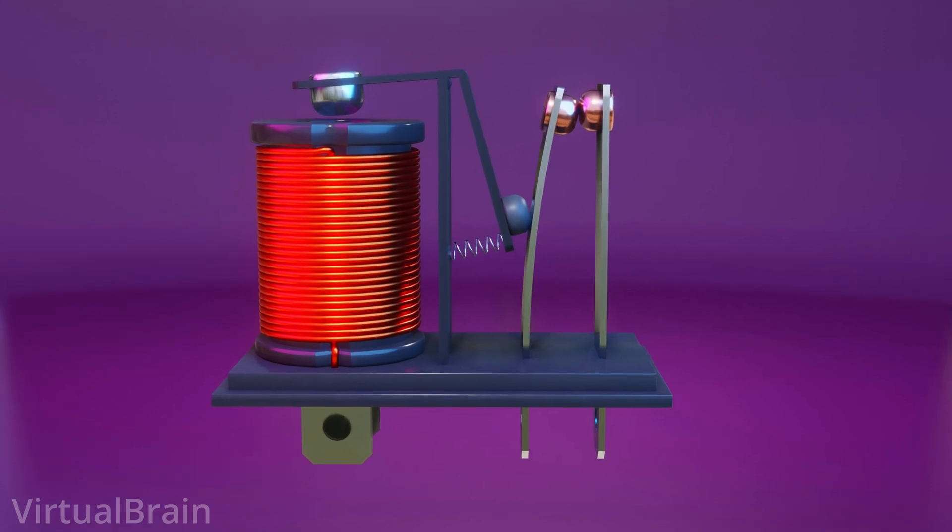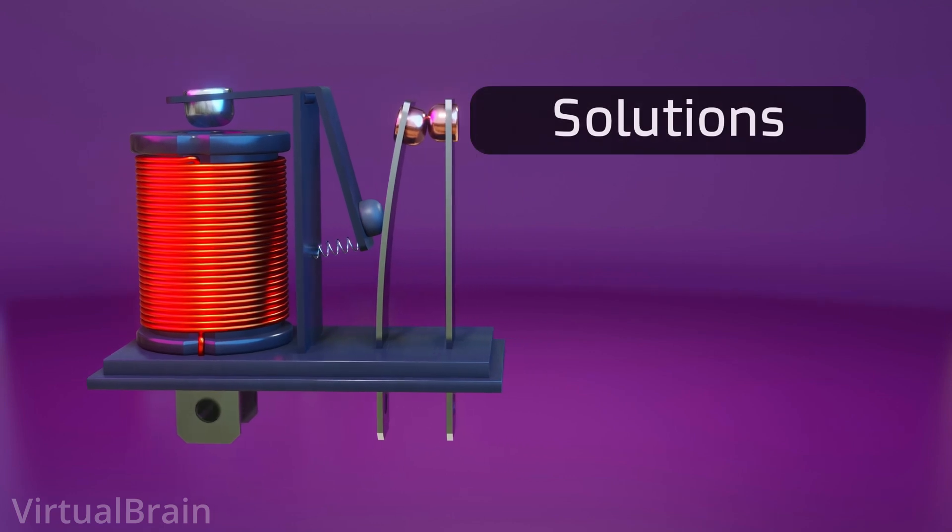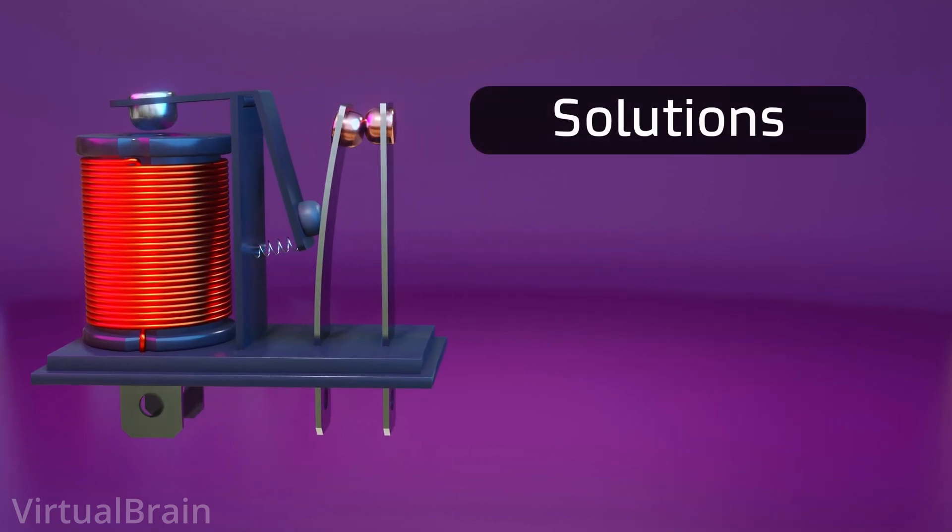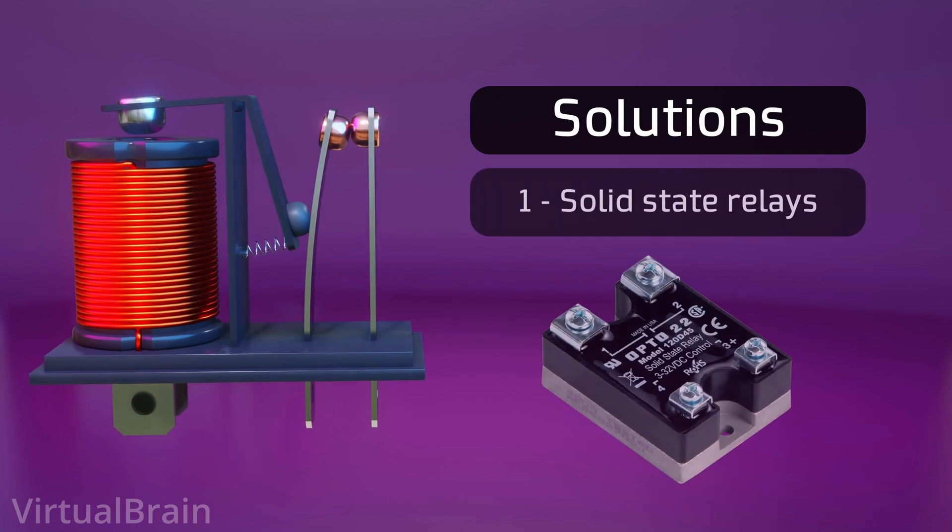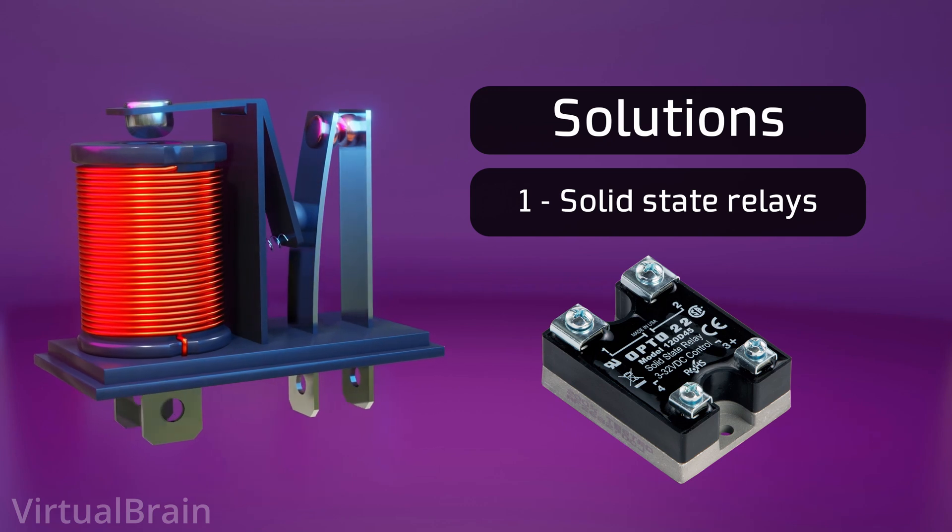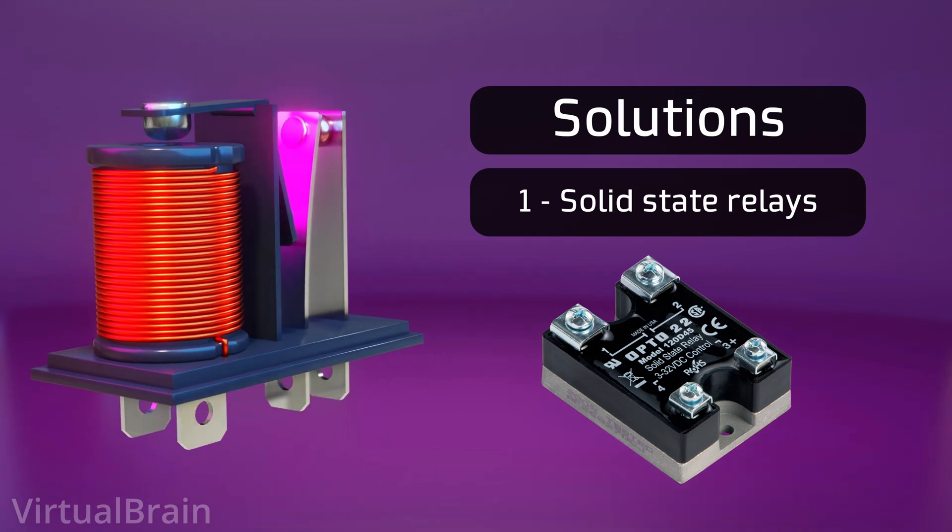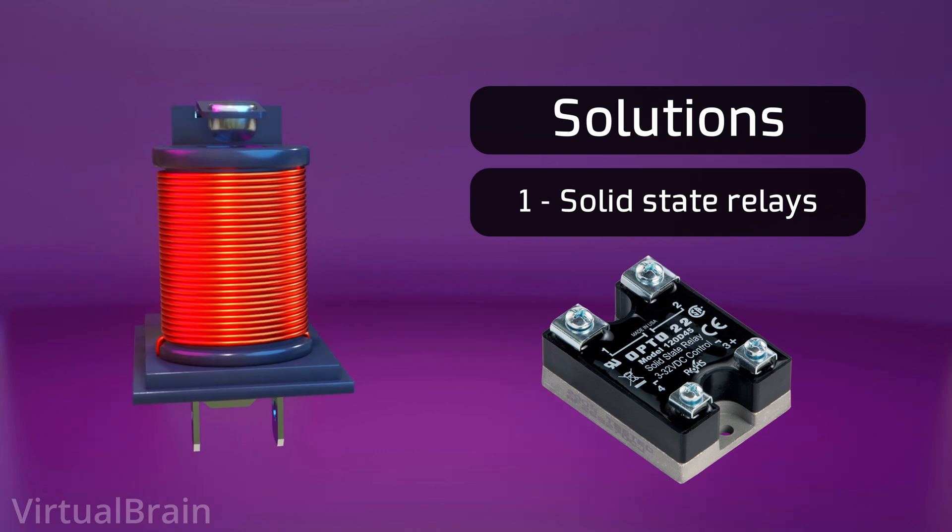For both cases, since the problem is directly related to the relay contacts which must physically move to open or close the circuit, the easiest solution would be to use solid state relays, which have no moving parts and therefore do not suffer from electric arc or the rebound effect. However, if we want to continue using electromagnetic relays, we also have some alternatives.